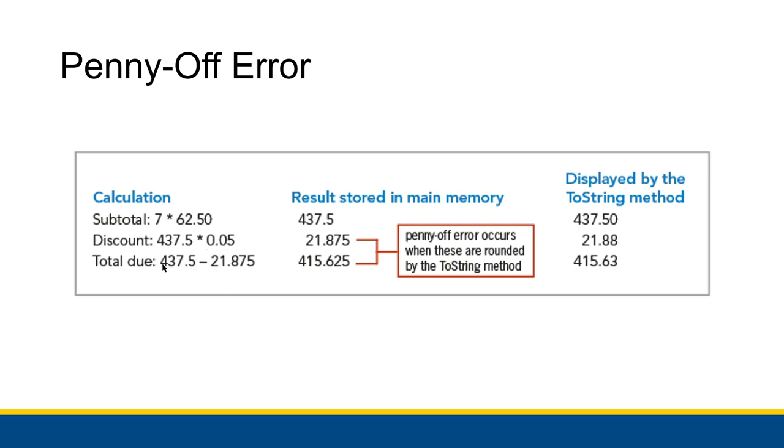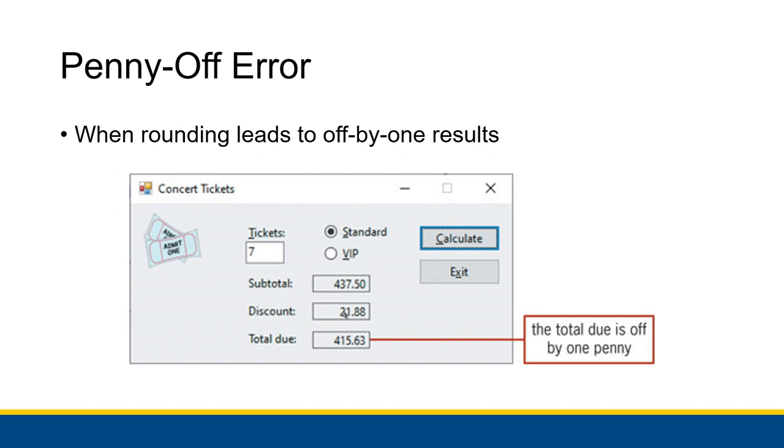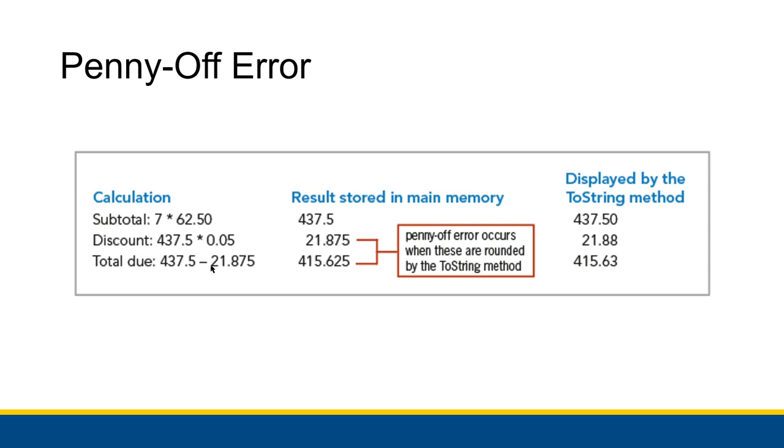However, when we subtract the discount, and this is behind the scenes by the way, we're not subtracting 21.88 from 437.50. No, we're subtracting 21.875 from 437.5, the result being 415.625. So we have this extra five thousandths at the end of both the discount and the total due. When we convert them to the ToString method, both round up, and then we get the arithmetic error.